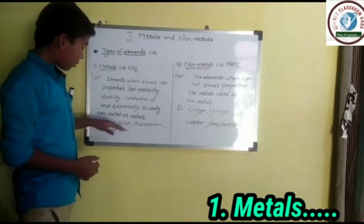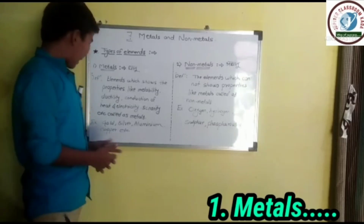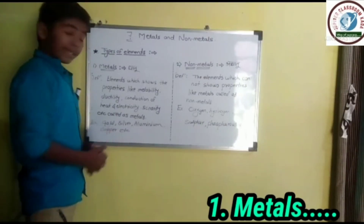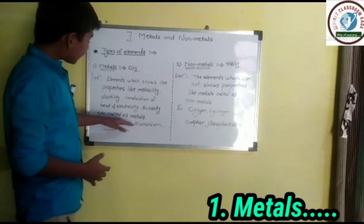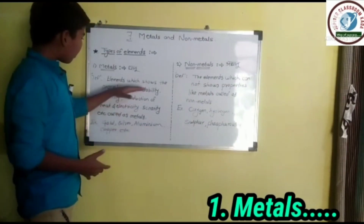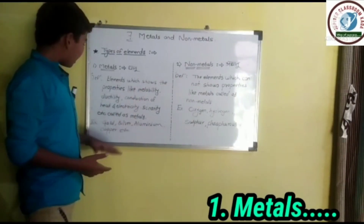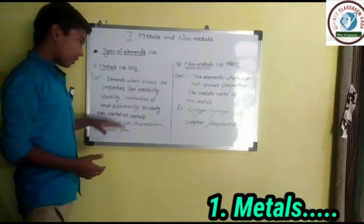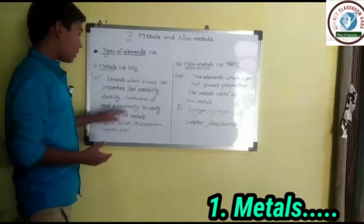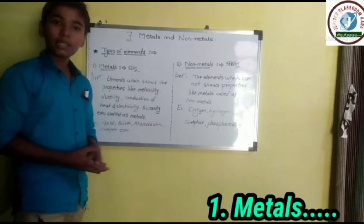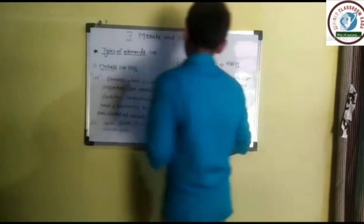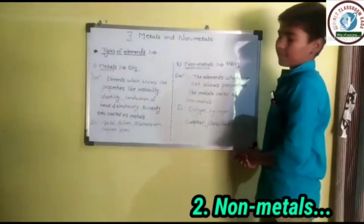Examples: gold, silver, aluminium, copper, iron, etc. Malleability means vardhaniyata, ductility means tanyata, sonority means nadmaita, and heat and electricity conduction is also a key property. The other type is non-metals.